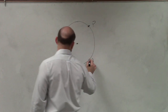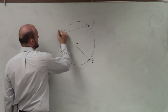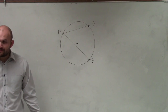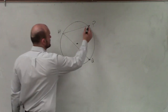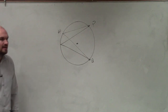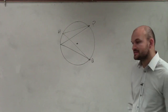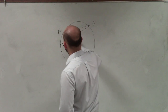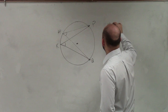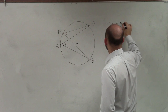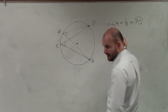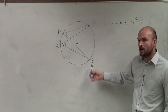Now let's say we have an inscribed angle going from here to here — let's call that H. Remember, the measure of angle H is going to be equal to one-half the measure of arc PQ. This inscribed angle is one-half of that arc.